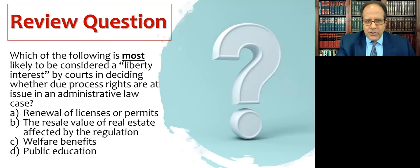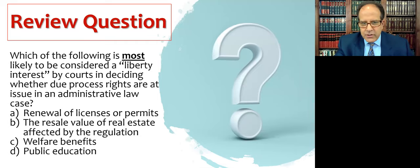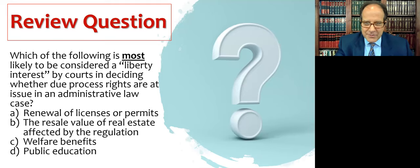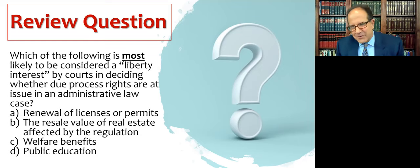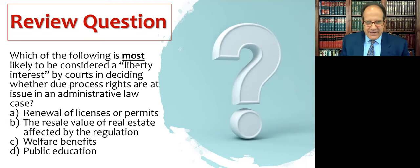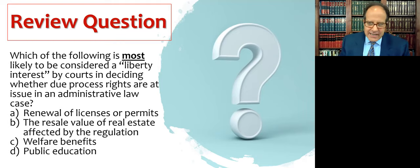Quick review question: which of the following is most likely to be considered a liberty interest by courts in deciding whether due process rights are at issue? Renewal of licenses and permits, the resale value of real estate affected by regulation, welfare benefits, or public education — being kicked out of public school. Which is most likely a liberty interest as opposed to something else? Hopefully you know the answer; if not, go back and re-watch to make sure you're clear on liberty interests, property interests, and due process rights. That concludes our lecture about due process and fair hearings in administrative law.